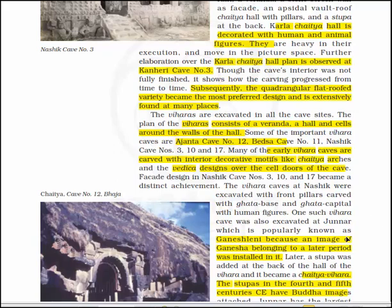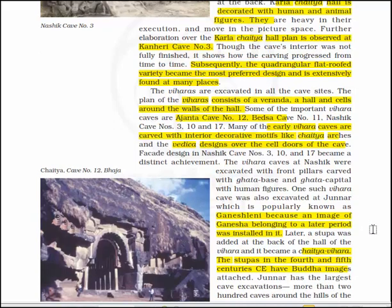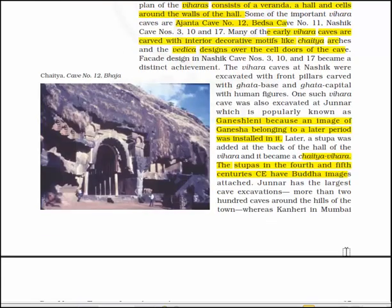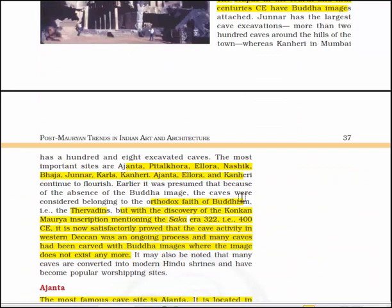The Vihara caves at Nashik were excavated with front pillars carved with Ghata base and Ghata capital with human figures. One such Vihara cave was also excavated at Junnar, popularly known as Ganesh Leni because an image of Ganesha belonging to the later period was installed in it. Later, a stupa was added at the back of the hall of the Vihara and it became a chaitya-Vihara. The stupa in the 4th and 5th century CE have Buddha images attached. Junnar has the largest cave excavations — more than 200 caves around the hills of the town — whereas Kanheri in Mumbai has 108 excavated caves.